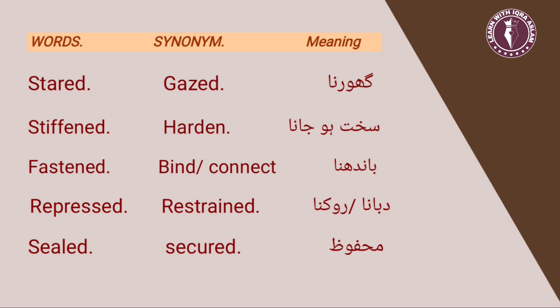So without further ado, we will start today's video. In the first part we will discuss chapter number one, Button Button — the important synonyms that you have to do in the past paper. There is also a possibility that an MCQ may be repeated from them. This is not only for the first year exam but for every type of competitive exam — synonyms are a very important part.